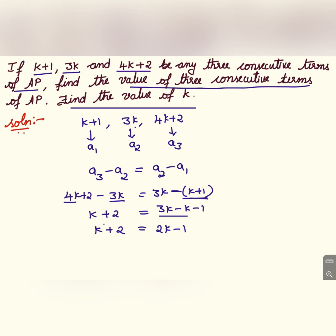Transposing k to the RHS and minus 1 to the LHS, we get 2 plus 1 equals 2k minus k, so 3 equals k. Therefore the value of k is 3.